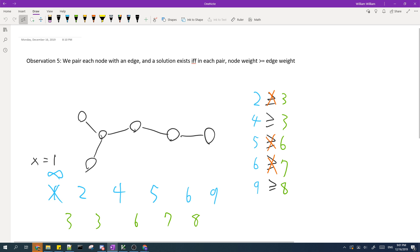However, for X equals 1, when we pair the node weights with the edge weights, some node weights are greater than edge weights. So for X equals 1, it doesn't work.